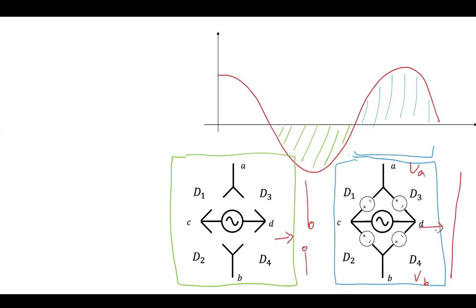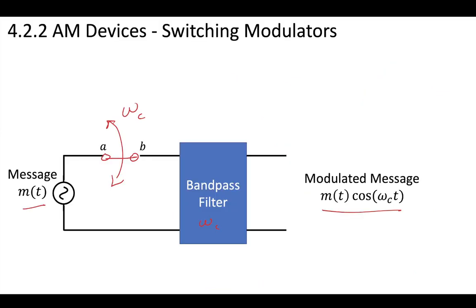And this is a switch — a switch that turns off and on. So long as this source at the center has your carrier frequency, this is going to result in multiplying a message by a Fourier series of coefficients, each one at multiples of your carrier frequency. Put it through that bandpass filter, and at the final result you're going to get just that one cosine wave that goes through, centered at your carrier frequency. And this is your modulated message.